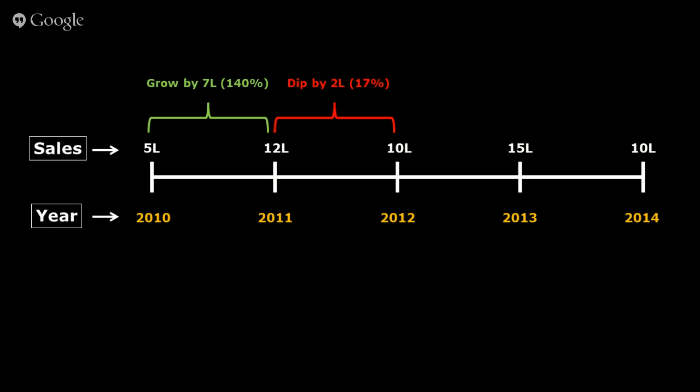Between 2011 and 2012, there was a dip from 12 lakh to 10 lakh — a 17% dip. Between 2012 and 2013, sales grew by 5 lakh, a 50% rise. In the last interval, there was again a dip of 5 lakh, which was a 33% dip in sales compared to the previous year.